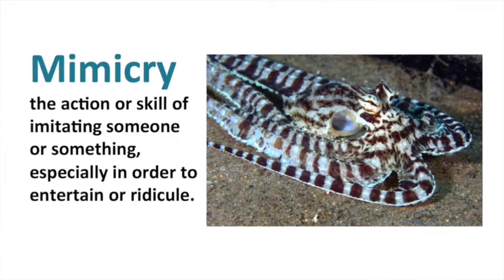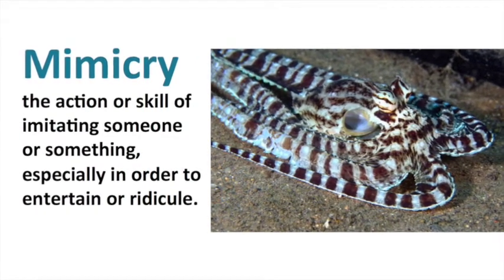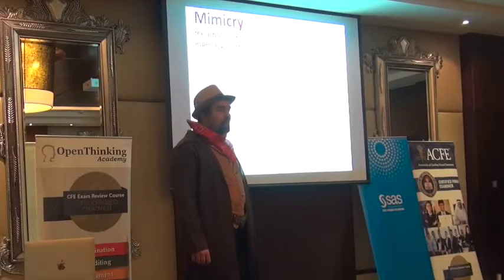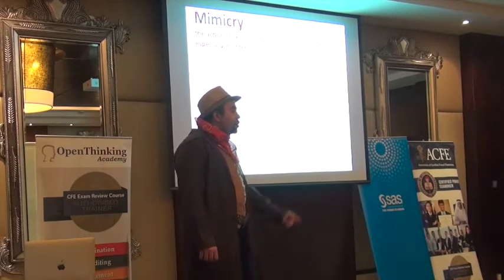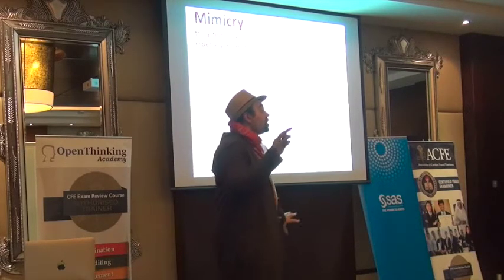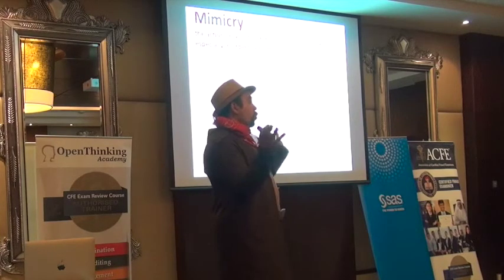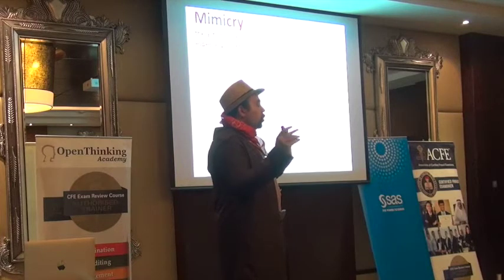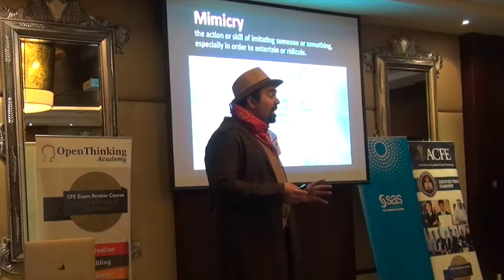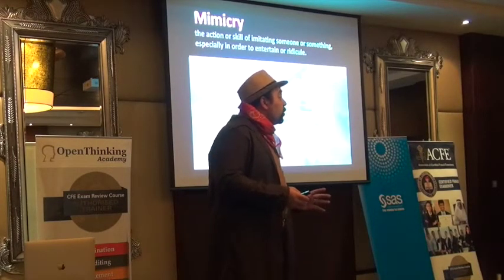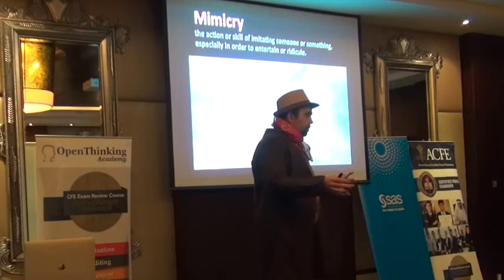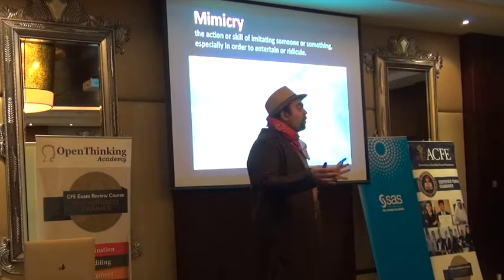Mimicry is an action or skill to imitate someone or something, especially in order to entertain or survive. There is an animal discovered in the ocean that has the ability to think about the danger or opportunity and decide what kind of mimicry to take. We thought it would just go and do one shape and stay — no, it will assess the danger and decide what kind of action to take.